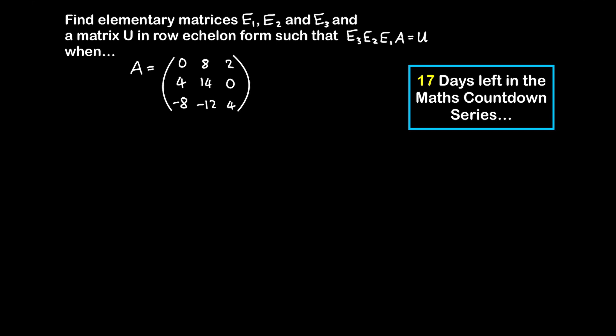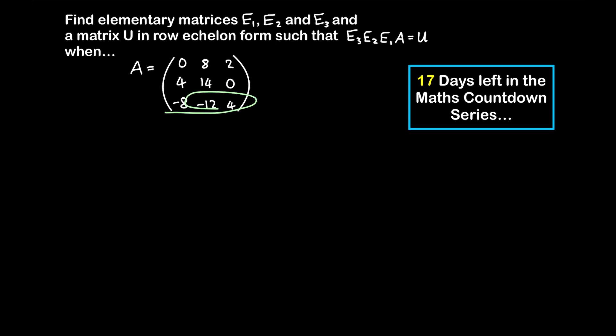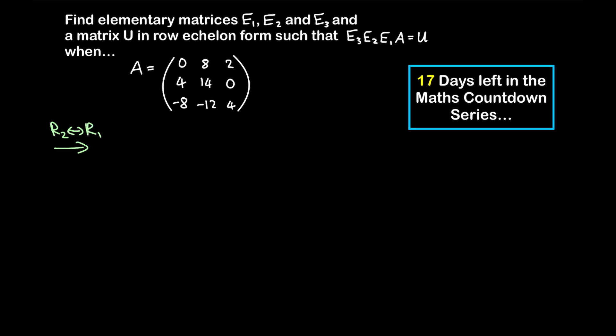Row echelon form requires two things: all zero rows must be at the bottom, and every pivot must be to the right of the pivot in the row above it. This matrix is not in row echelon form because the pivot in row 1 is to the right of the pivot in row 2 — it needs to be to the left. So a good way to start is to swap row 2 and row 1.